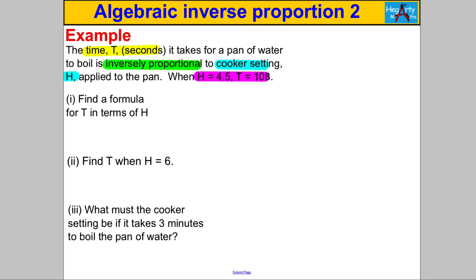Let's get going. T is inversely proportional to H, so therefore T is directly proportional to 1 over H. Then we can write our formula: T must be K over H, where K is a constant of proportionality. We can substitute in our values: 108 for T is K divided by 4.5.